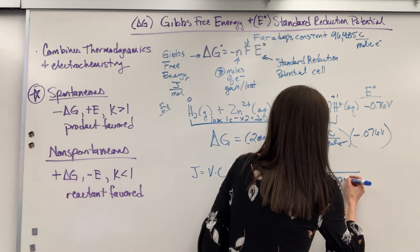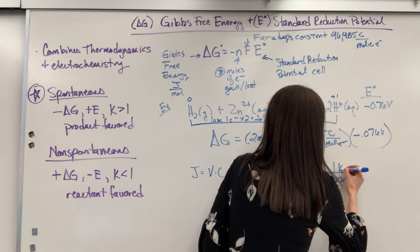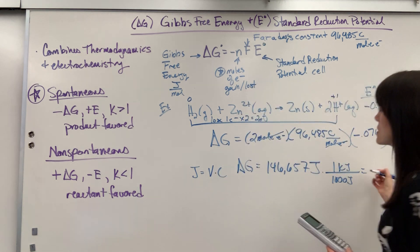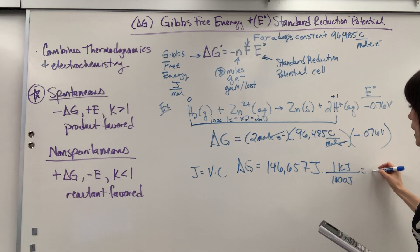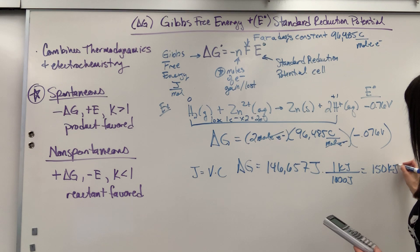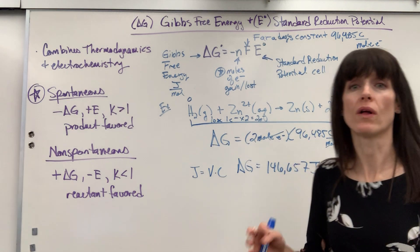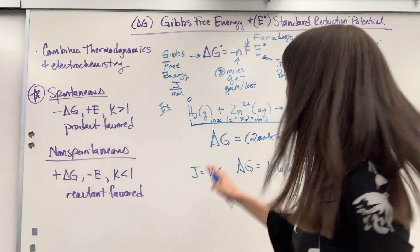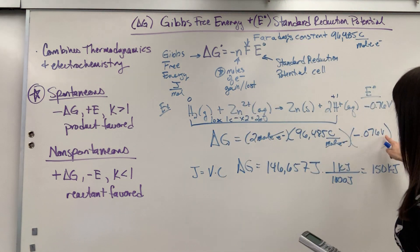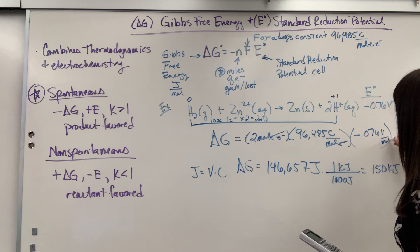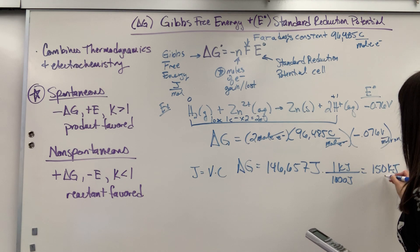I had two sig figs here so we'll do this to two sig figs, 150 kilojoules per mole of reaction. This would be per mole of this overall reaction, that's where the mole of reaction would come in right there.